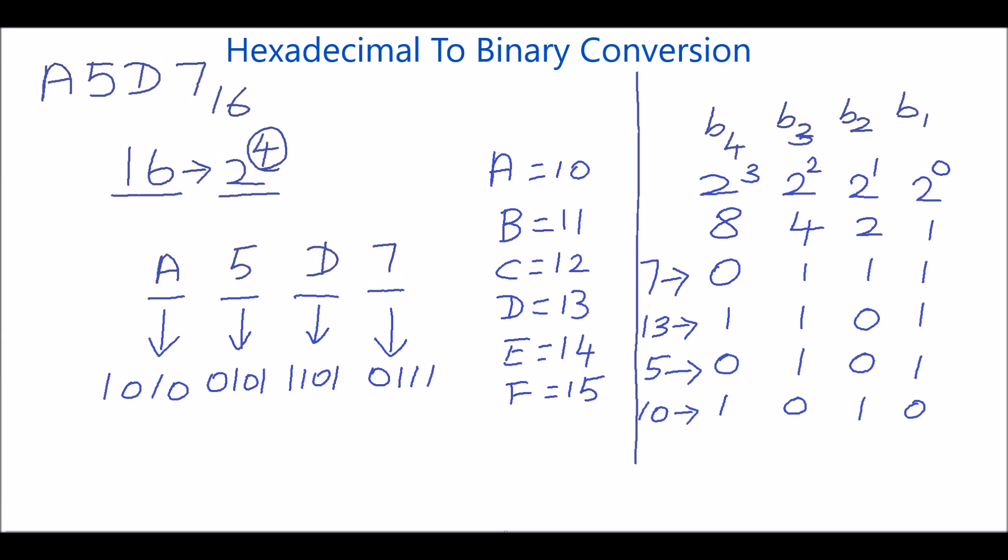So, the hexadecimal number A5D7 can be written as 1010 0101 1101 0111 base 2.